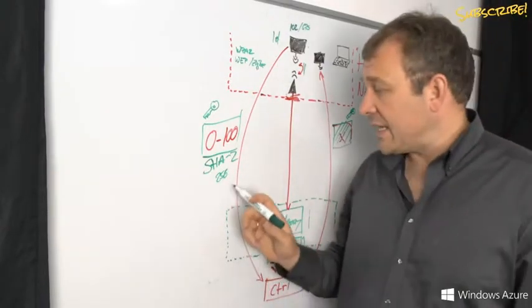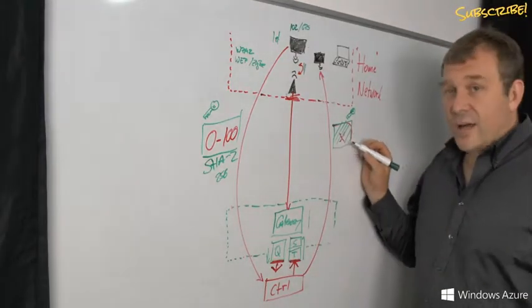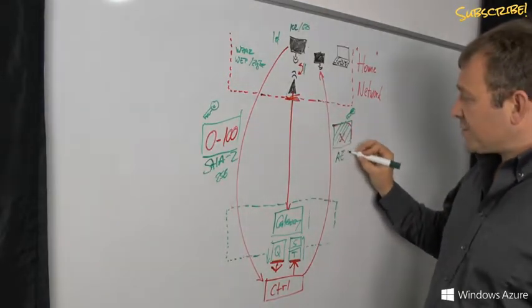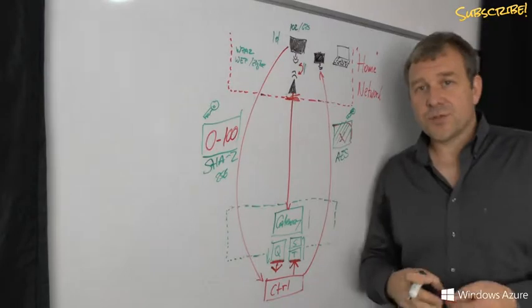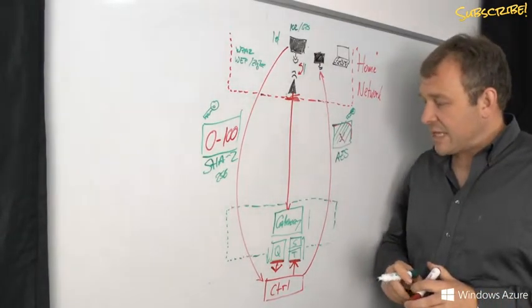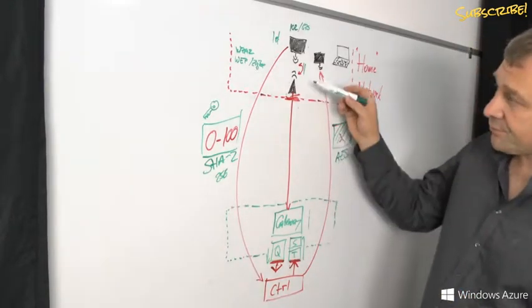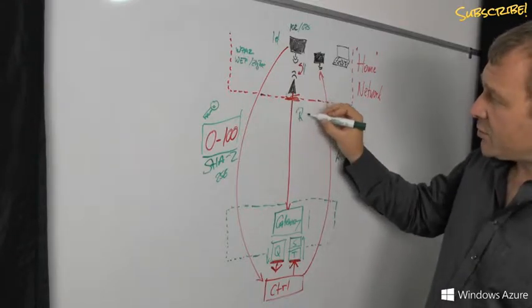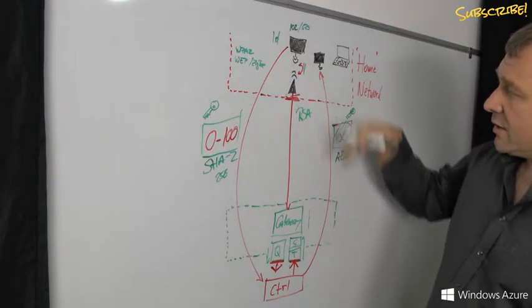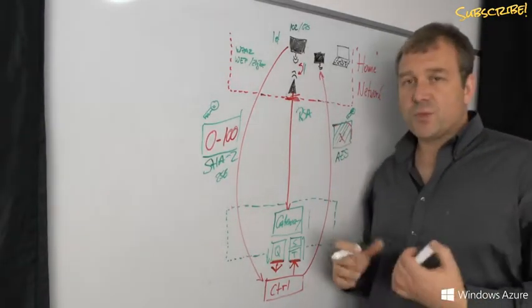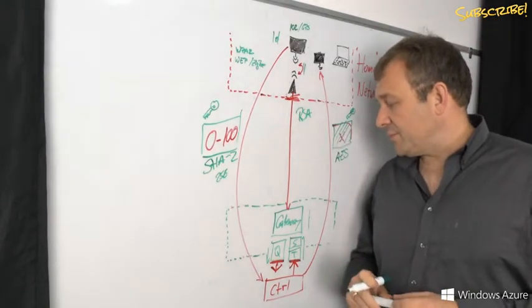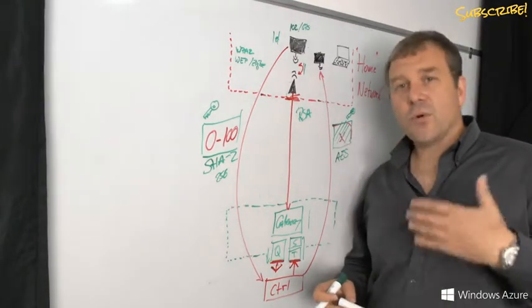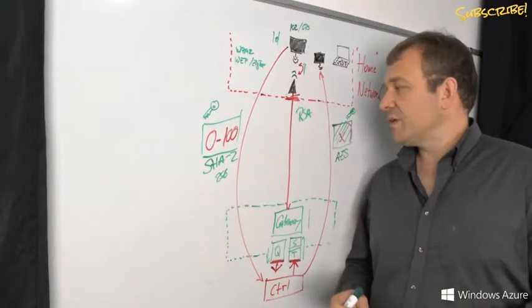One signature algorithm that we generally use is SHA2, specifically SHA2 with 256-bit key length. The algorithm we use for encryption is AES for symmetric encryption because payload encryption is something you do using symmetric mechanisms. Then if we need to exchange session keys on that path, there's obviously the option of doing that using RSA.